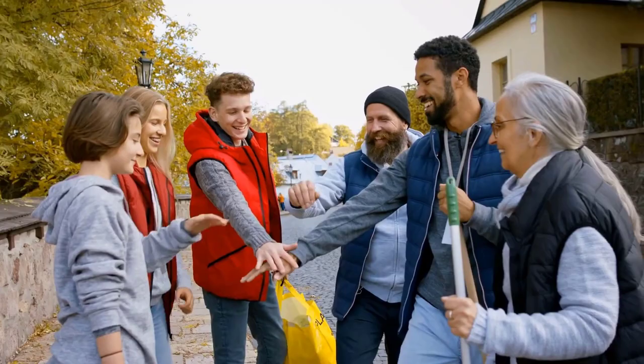The second one here is to create your support system. Do you invest time, money, focus, energy towards finding a support system? It can be a community, it can be a mentor, it can be a coach who can help you, guide you and fast track your growth, fast track your learning towards you becoming an ATM.